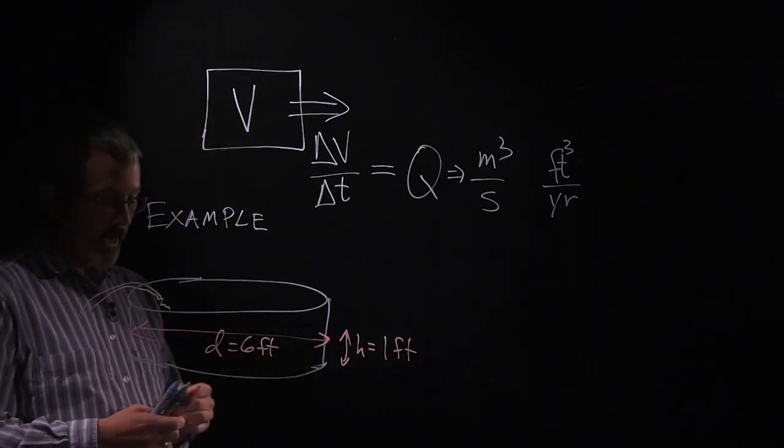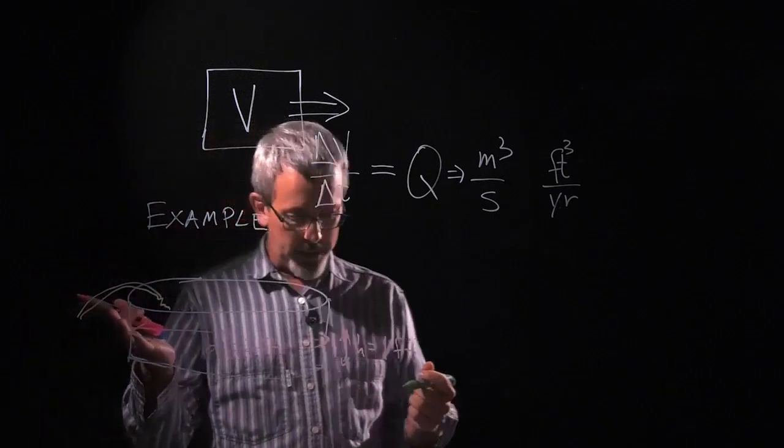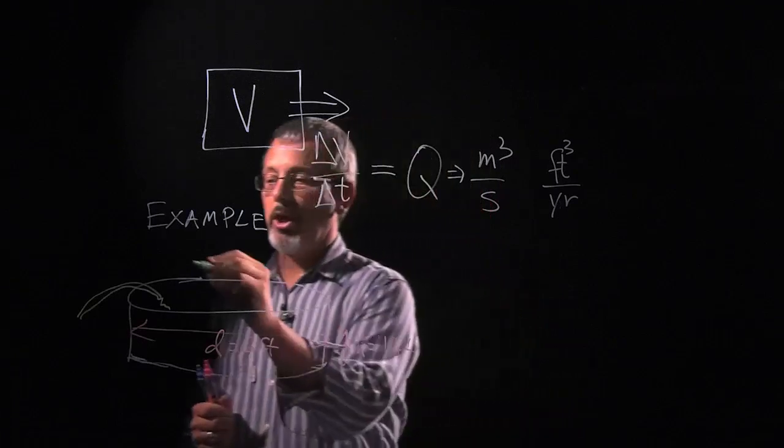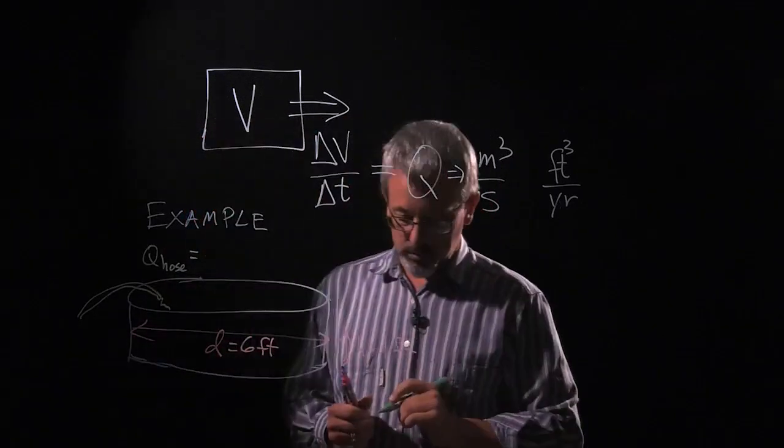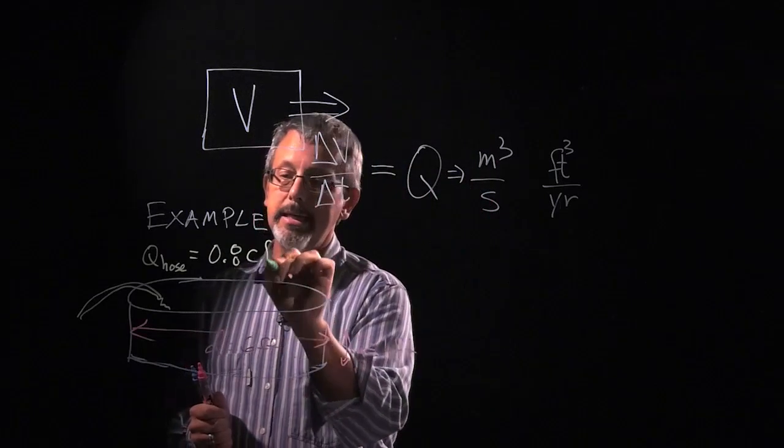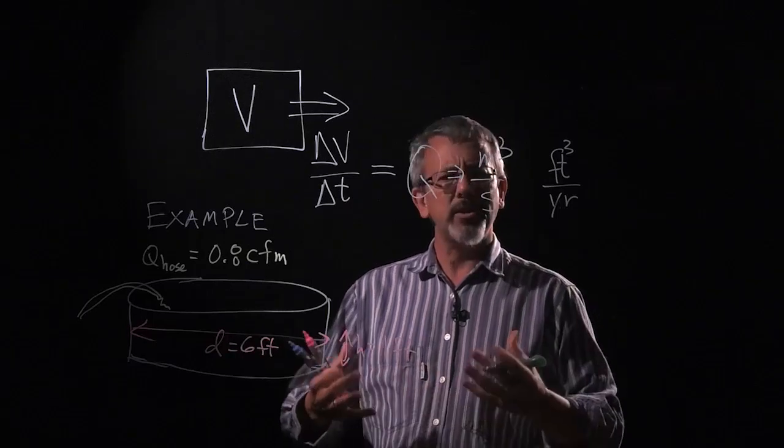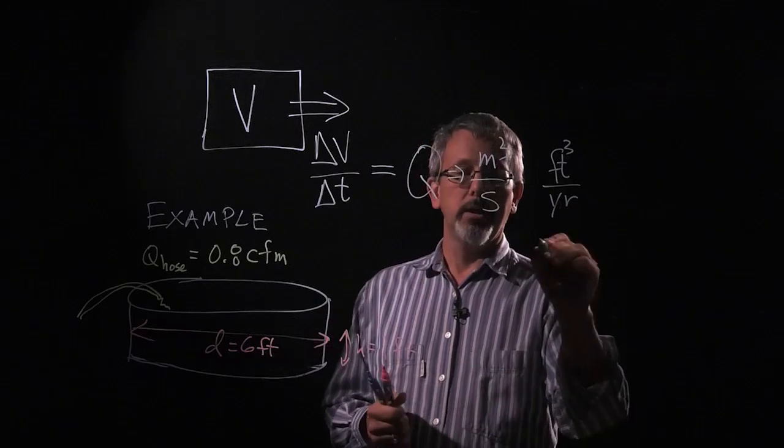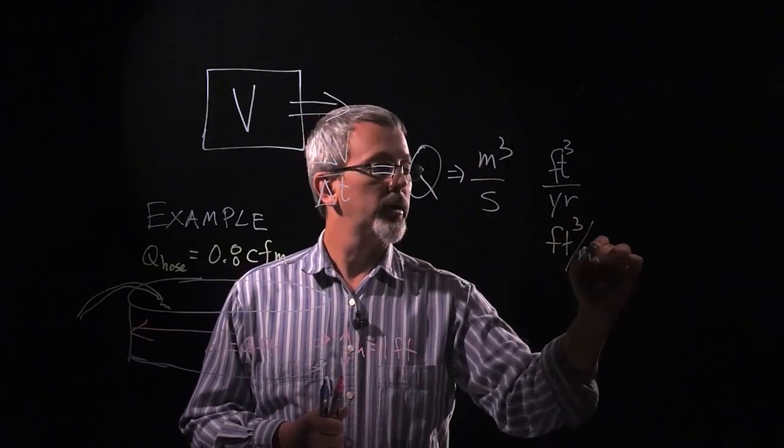Well in order to know that we'll need to look up or have some information about how fast my hose is flowing. And we're going to say that the hose supplies an amount of 0.8 CFM. CFM, what might that stand for? In this case that stands for cubic feet per minute. In other words, feet cubed per minute.